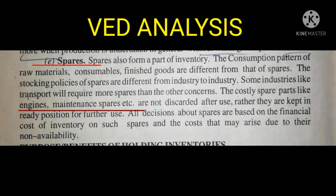Spares also form a part of inventory. There are different types of inventories we generally use: raw material, work in progress, consumables, finished goods, and spares. The consumption pattern of raw materials, consumables, and finished goods is different from that of spares.